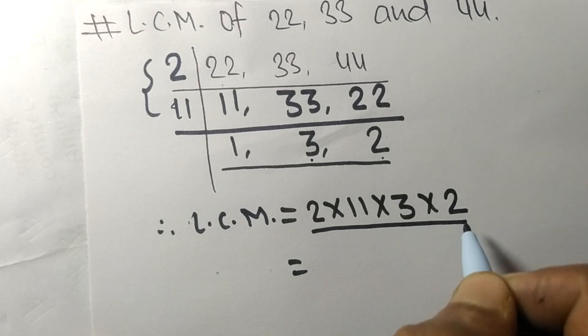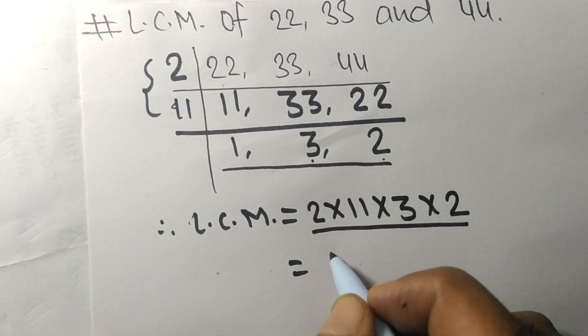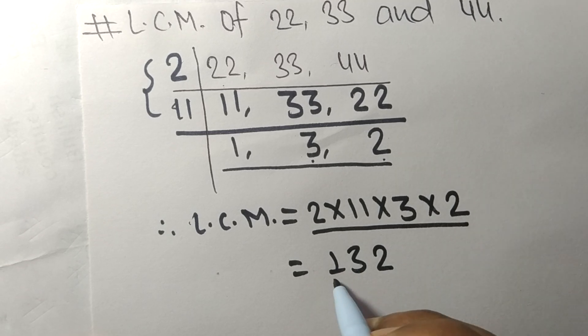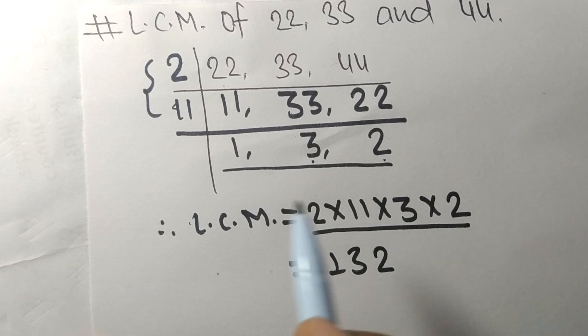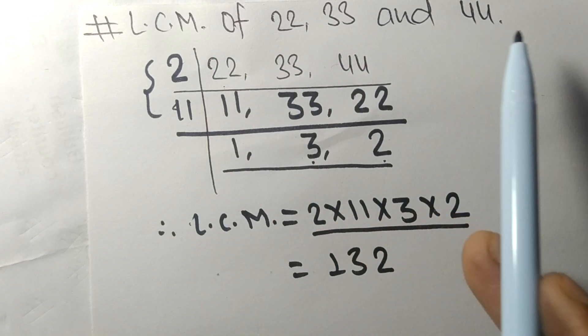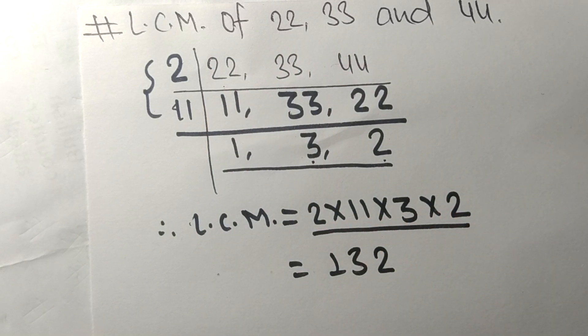So by multiplying all these numbers we get 132. So 132 is the LCM of 22, 33, and 44. So this much for today and thanks for watching.